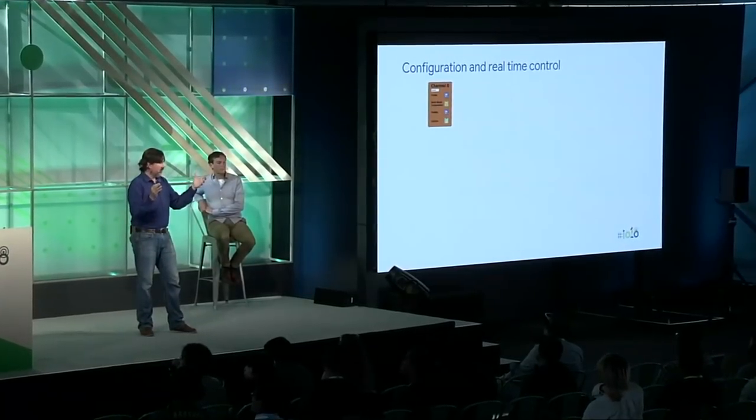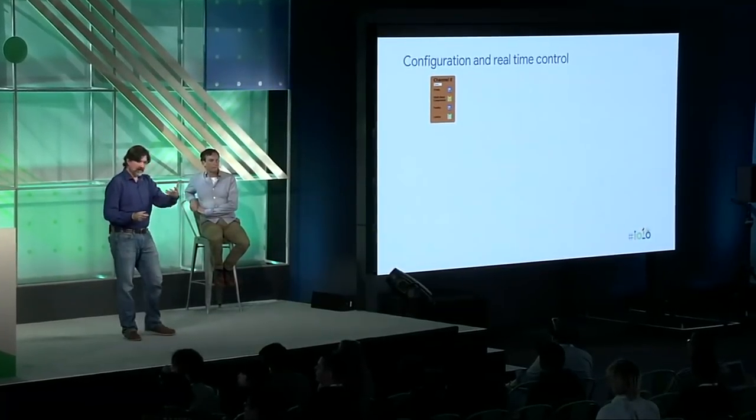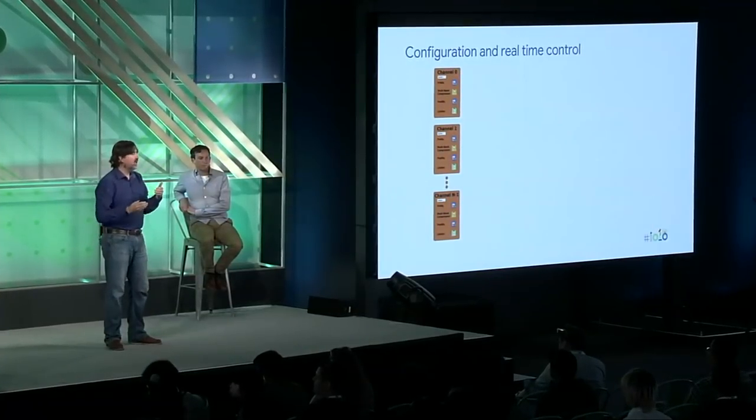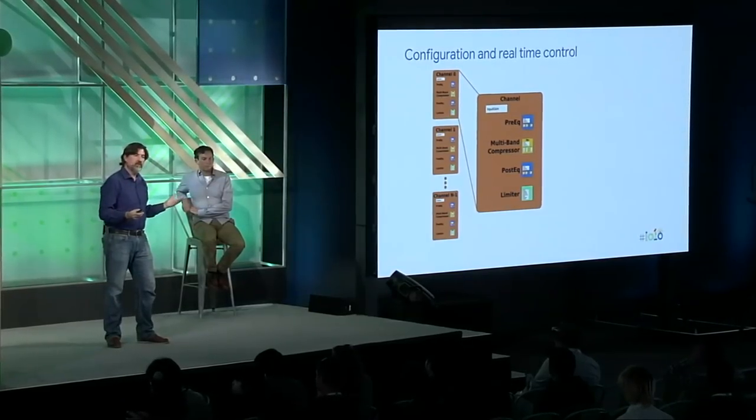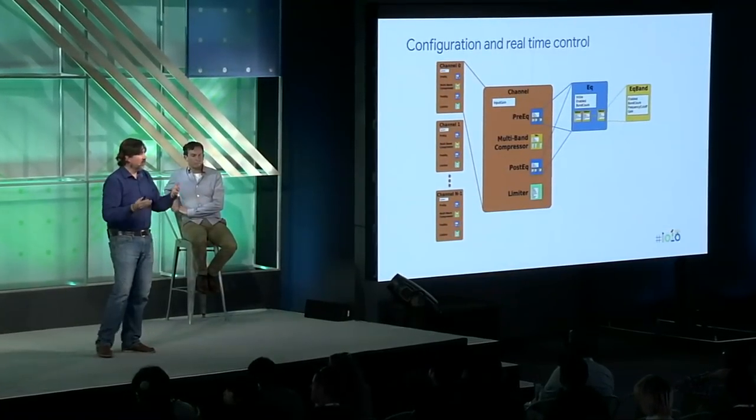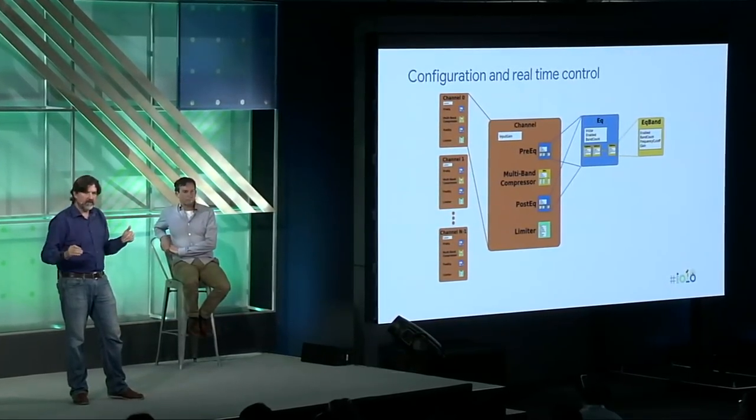Rather than going through the dry API code, I want to show this more conceptually in graphics. In the configuration or at runtime, we can access channels by index number: 0, 1, 2, 3. Each channel object has parameters like input gain, and you can access the stages: pre-EQ, multiband compressor, post-EQ, or limiter. The two EQs look exactly the same from the API viewpoint. You can go from band to EQ to channel, giving you access to all the granularity you want.